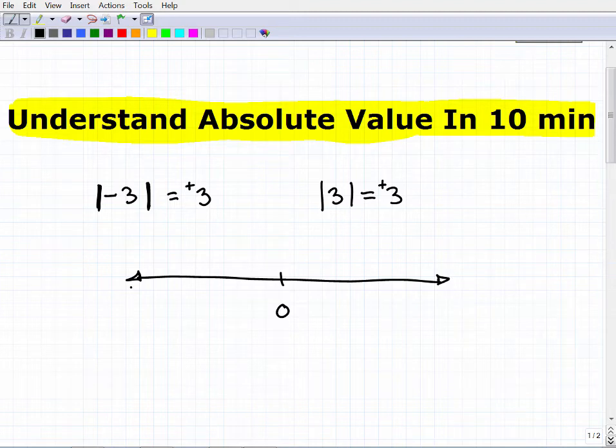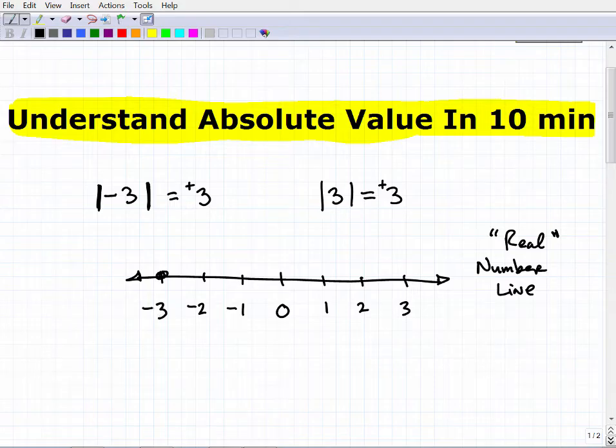So this is a number line. You've probably seen this. We really want to refer to this as the real number line, but that's kind of an aside topic. So here we have 0 in the middle. We go out 1, 2, 3, and as we continue to the right, numbers get larger, right? And this way, as we go left, numbers get smaller. So we have negative 1, negative 2, negative 3. So what I'm saying here is the absolute value of negative 3 and the absolute value of 3 are both positive 3. So what does that mean? Well, what it means is that the distance, the distance negative 3 is from 0 is, in fact, 3 units away.